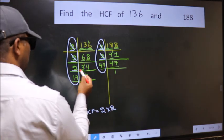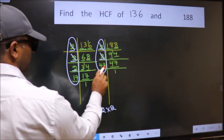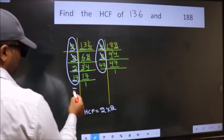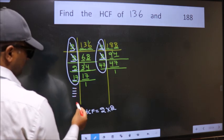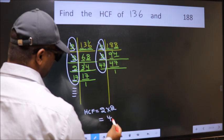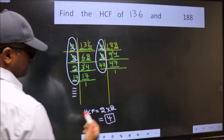Next number 2. Do we have 2 here? No. Next number 17. Do we have 17 here? No. No more numbers have been left out. So, our HCF is 2×2, which is 4. This is our HCF.